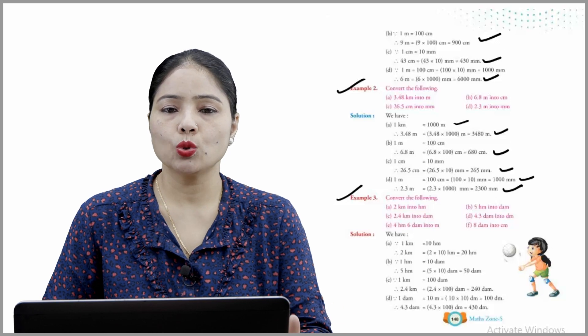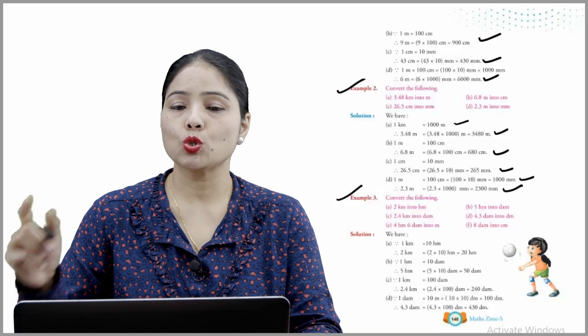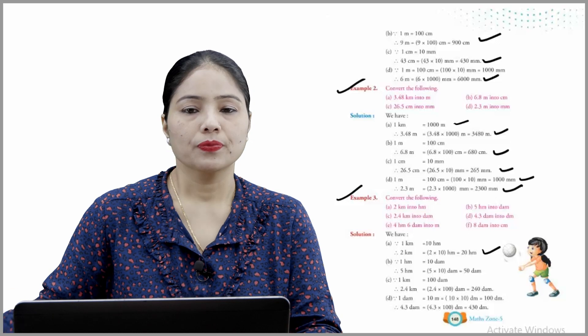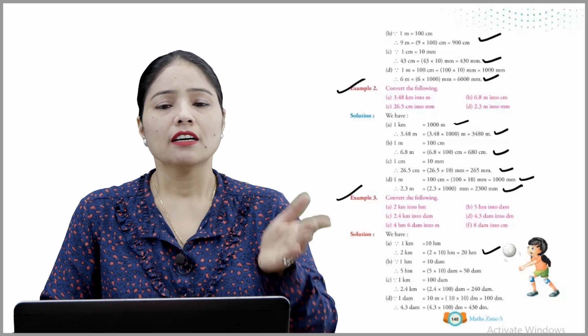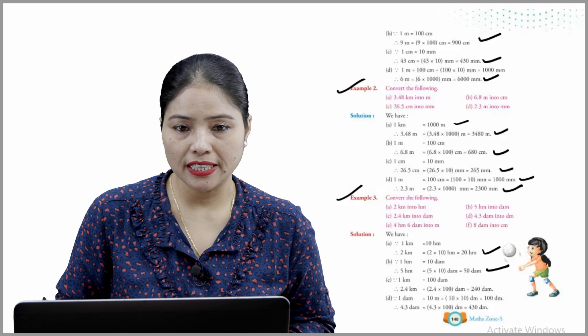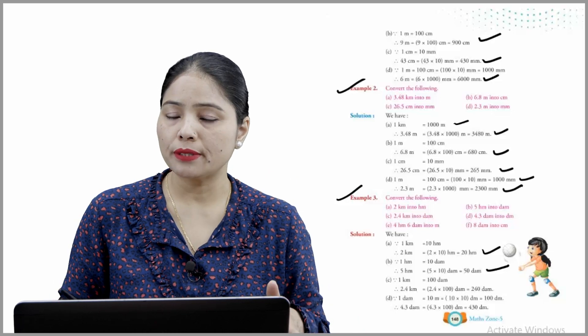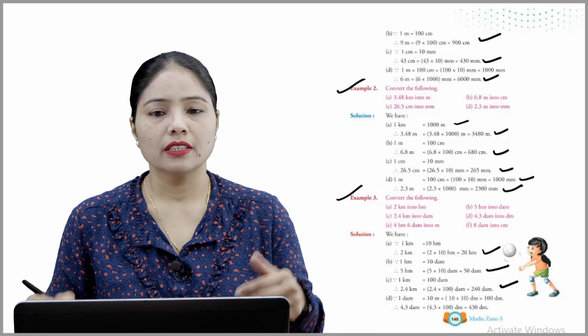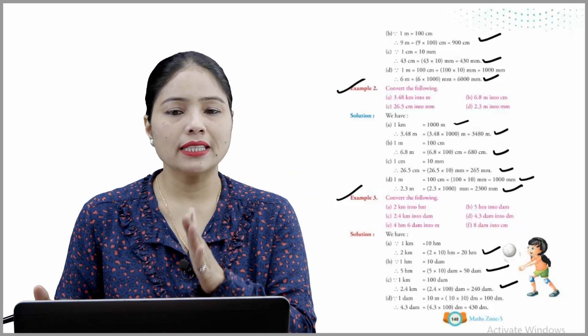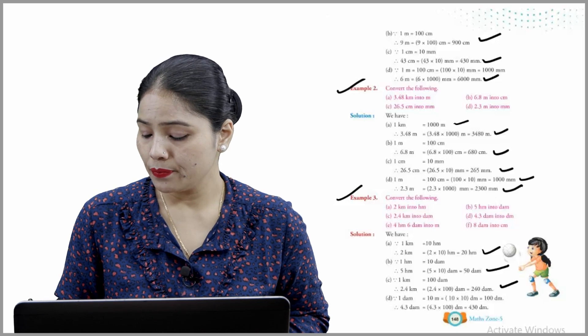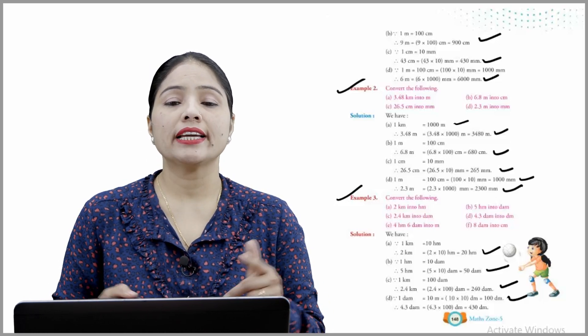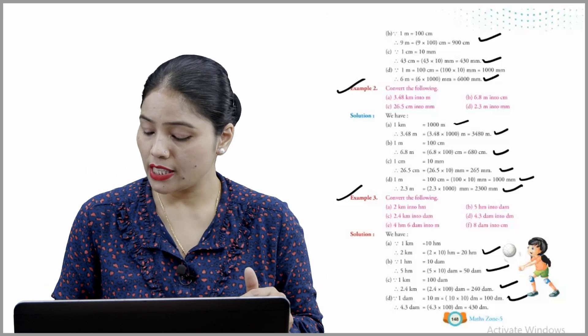Example 3 — convert the following. First: 2 km into hectometers. 1 km = 10 HM, so 2 km = 20 HM. Second: 1 HM = 10 dam, so 5 HM = 50 dam. Third: 1 km = 100 dam, so 2.4 km × 100 = 240 dam. Fourth: 1 km = 100 dam, so 4.3 dam × 100 = 430 dam.